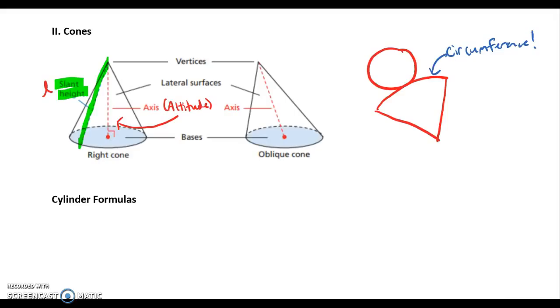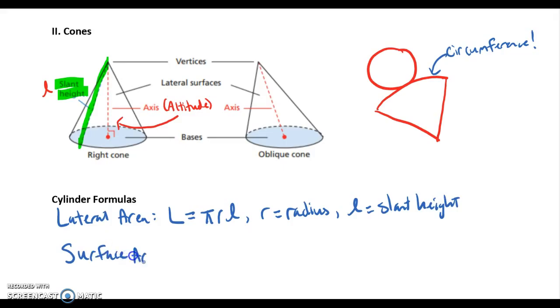So formulas. Lateral area, capital L, is basically going to be like the idea of one-half perimeter times slant height. So it's one-half the circumference, which is just pi times r times slant height. So again, r is the radius. Cursive L is slant height. Surface area, same deal. Capital S is lateral area plus area of the base, which is just pi r slant height plus pi r squared, because our base is always a circle.